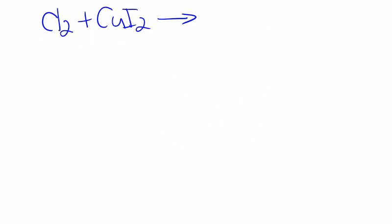For example number 2 on page 8, we have Cl2 plus CuI2 going to our yields arrow. We recognize this as a single replacement reaction because there is a free element. Just because Cl has a 2 with it does not mean it's not a free element — it has the 2 because it's part of BRINCL HOF. And we have our compound, CuI2.